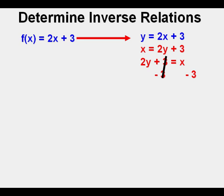Now we set about solving for y by subtracting 3 from both sides of the equation. 3 minus 3 cancel on the left side. We bring down what's left: 2y equals x minus 3. Next, we solve for y by dividing all terms by 2. 2 divided by 2 cancel on the left side. We bring down what's left and solve for y: y equals 1 half x minus 3 over 2, which I decimalized to become 0.5x minus 1.5.